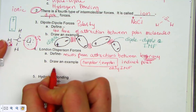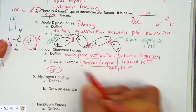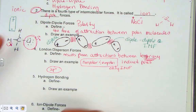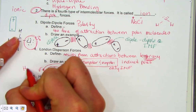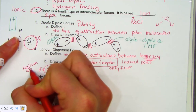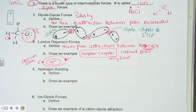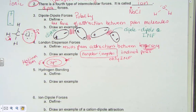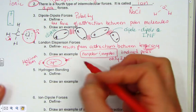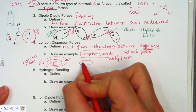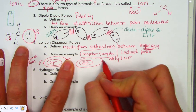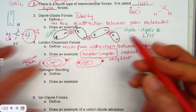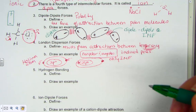Helium: two positive protons in the nucleus, two electrons outside. If this helium atom comes in close contact with another helium atom, and the electron density is rich on one side, that repels the electrons of the nearby atom and pulls its positive protons closer. That's exactly what an induced pull is — instantaneous and then gone.